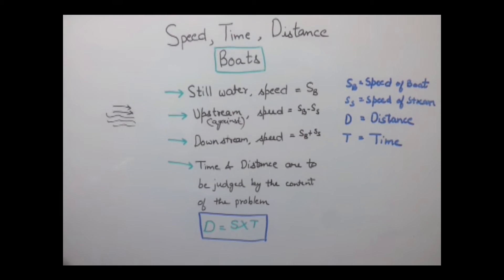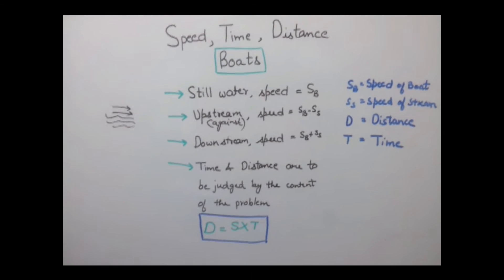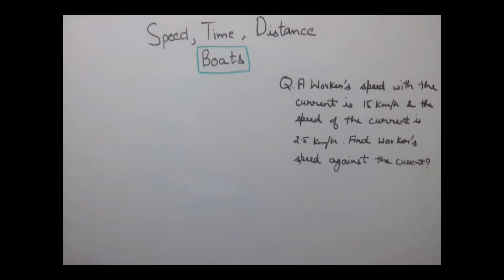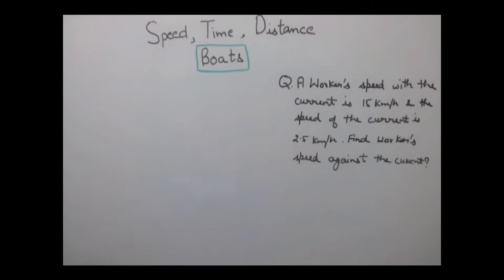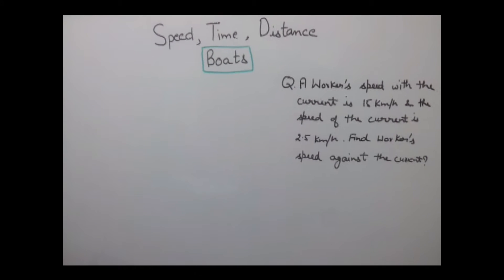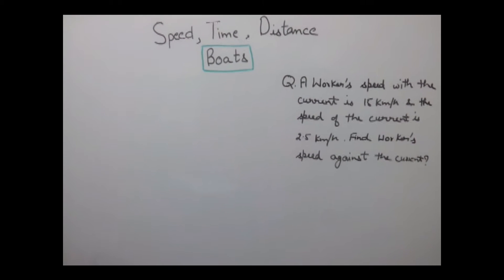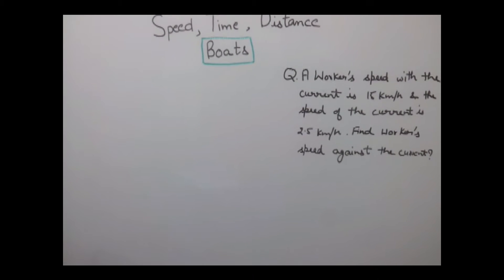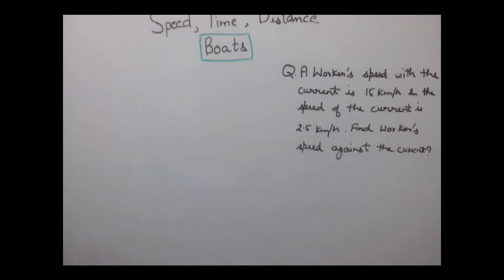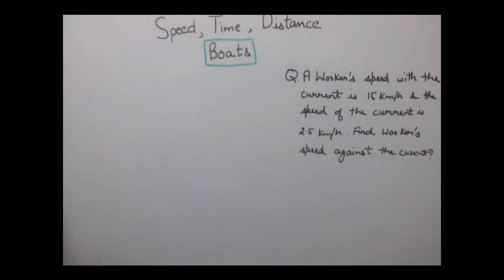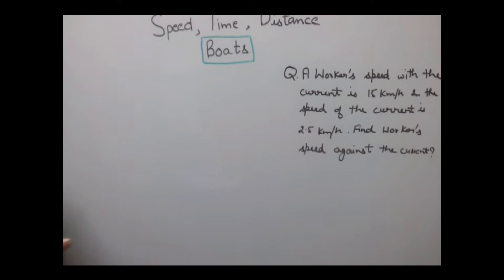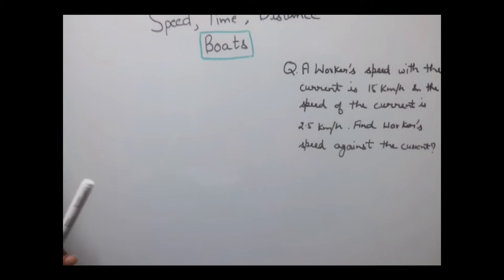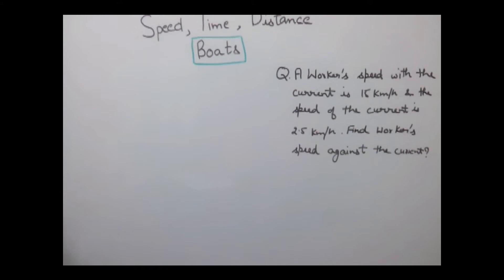Now let's solve some problems related to boats. The example says: a worker's speed with the current is 15 km per hour and the speed of the current is 2.5 km per hour. Find the worker's speed against the current. First, check the units — here both are in km per hour, so there is no need to convert any units.